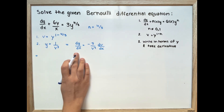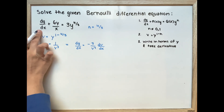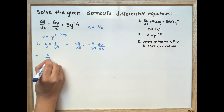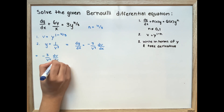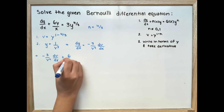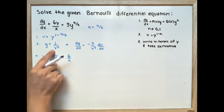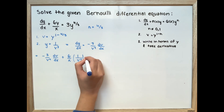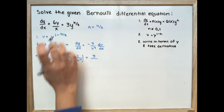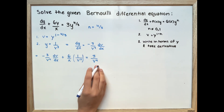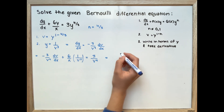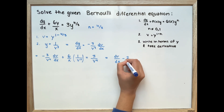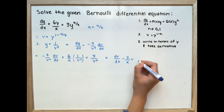We substitute dy/dx and y into the original equation. This gives us negative 3v to the power of negative 4 times dv/dx, plus 6 over x times 1 over v cubed, equal to 3 times v to the power of 4 over 3. After simplifying, this becomes dv/dx minus 2 over x times v, equal to negative 1.